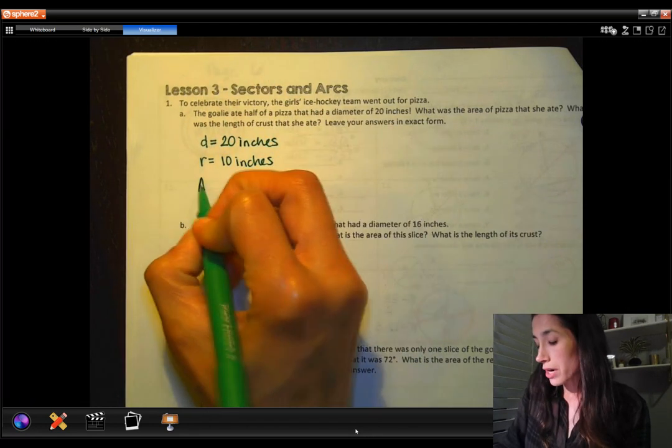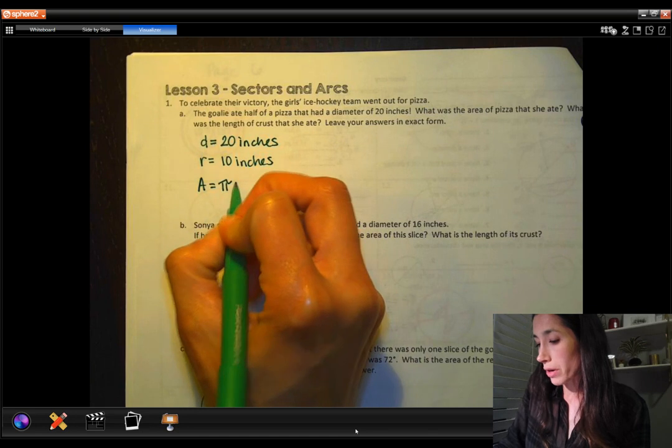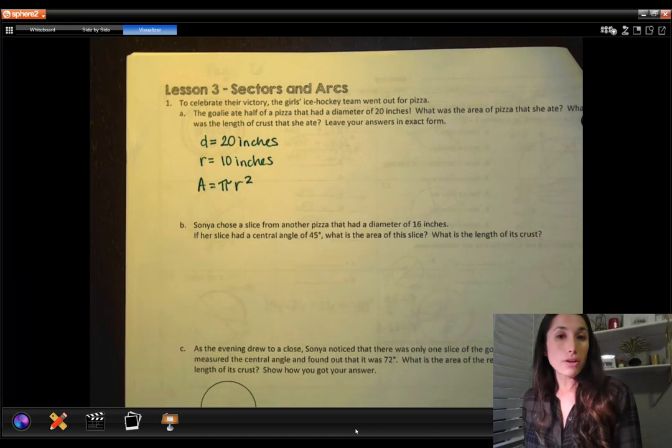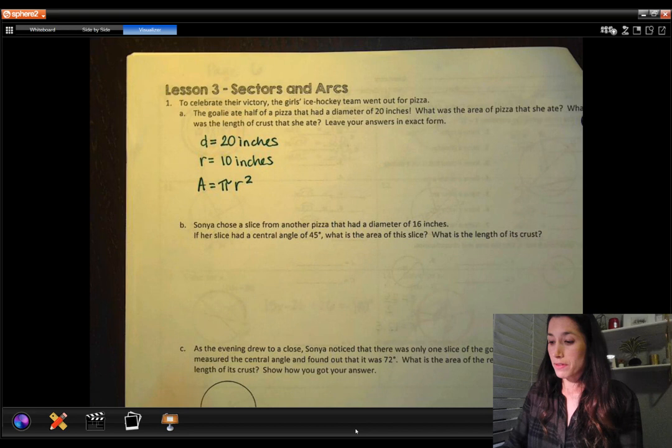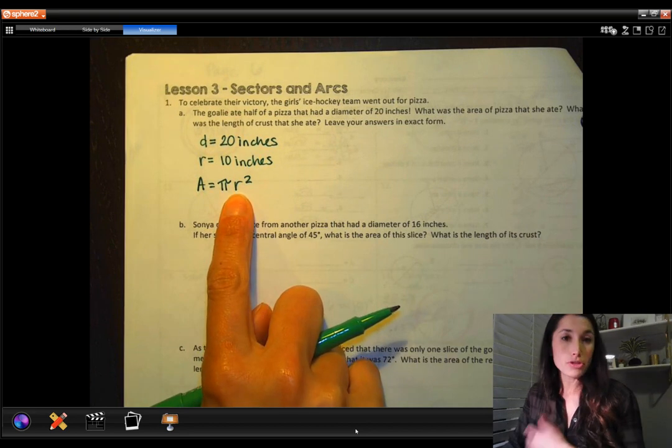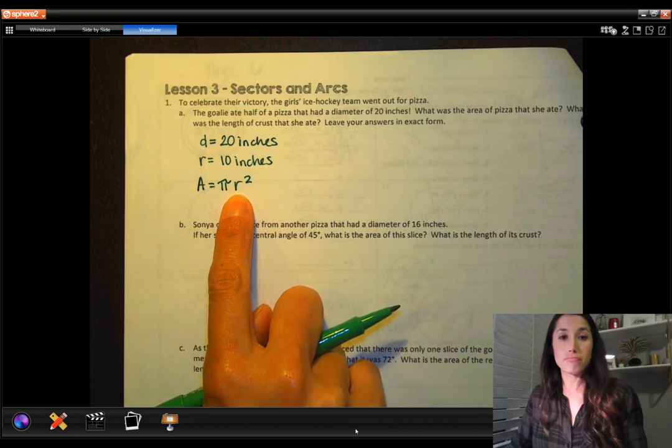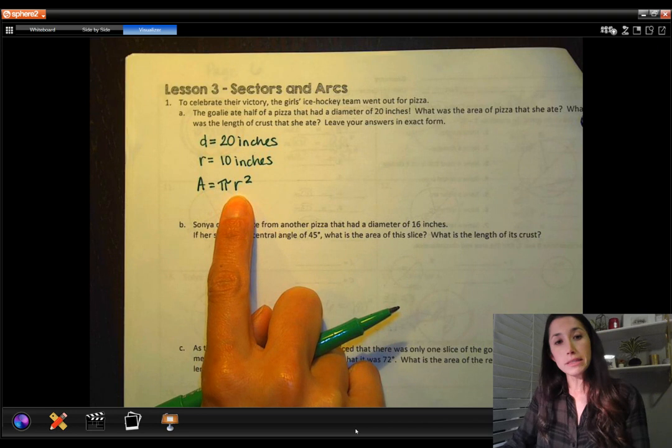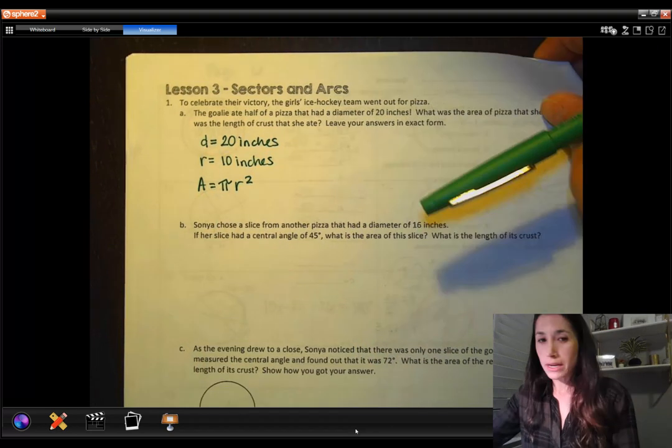Remember the formula for area is pi times our radius squared. So then all you have to do after you find the area of this entire circle is just multiply that area by half because the goalie ate half of the pizza. You're gonna leave that in exact form.